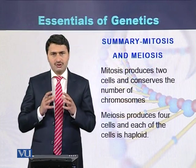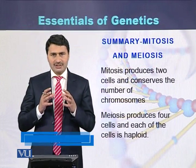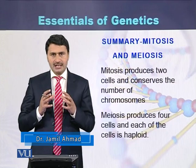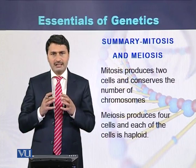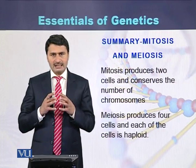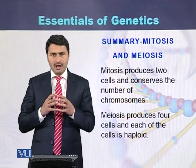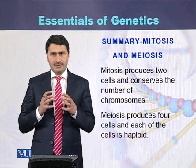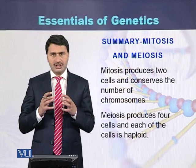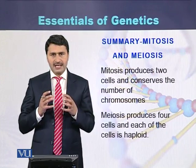Mitosis produces two cells that are genetically identical to the parent cell and conserves the number of chromosomes. In case of meiosis, a single diploid cell is converted into four cells, all containing the haploid number of chromosomes. These four cells are genetically not identical to each other or to the parent cell.